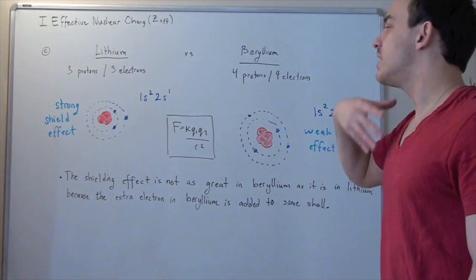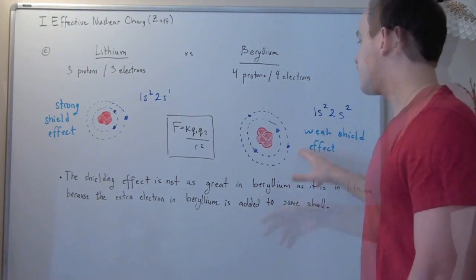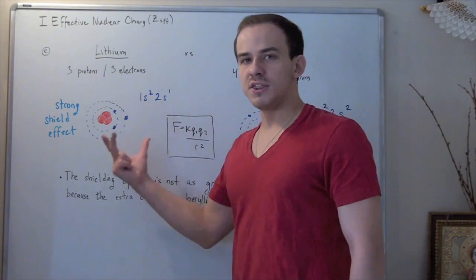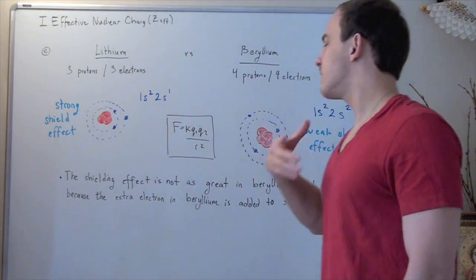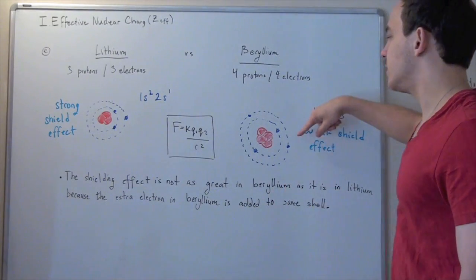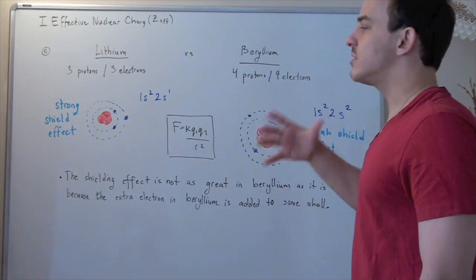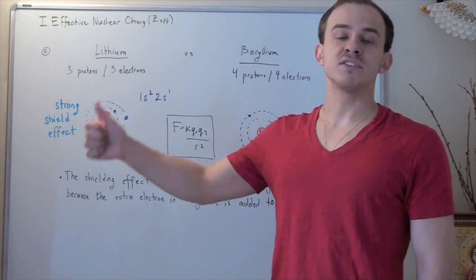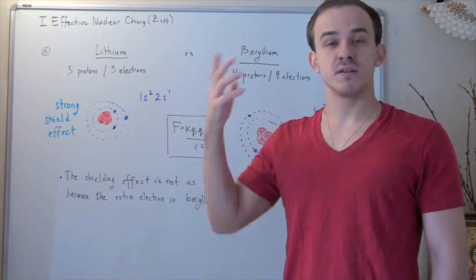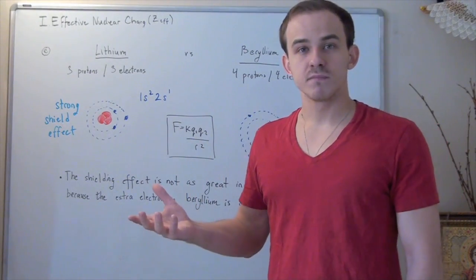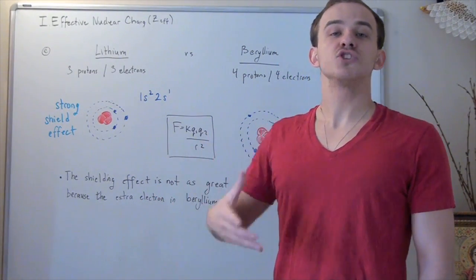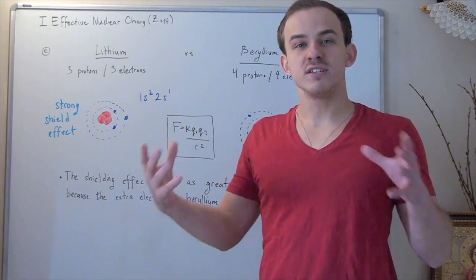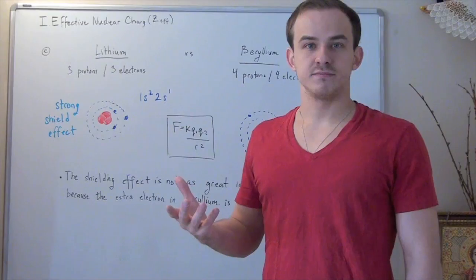In other words, there is a greater effective nuclear charge in beryllium than in lithium because of this extra electron added to the same energy level. This illustrates the trend: as we move from left to right across a period, the effective nuclear charge increases, decreasing the atomic radius.